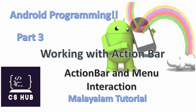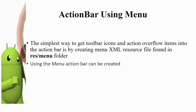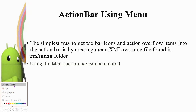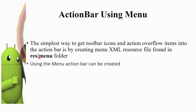We have a menu, option menu, and different types of menus. We will use the action bar to implement them. The simplest way to implement an action bar is using menus. The simplest way to get toolbar icons and action overflow items into the action bar is by creating a menu.xml resource file found in the resource menu folder. Using the menu file, the action bar can be created.